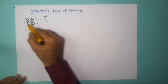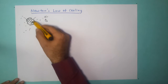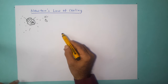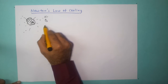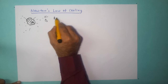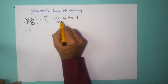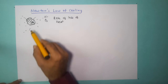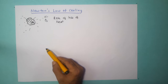This object radiates heat to the atmosphere, to the air, and it loses heat. What Newton's law of cooling talks about is the rate of loss of heat — how fast does this object lose heat? That depends upon the temperature difference between the object and the atmosphere, in this case the air.